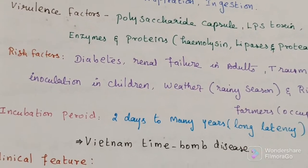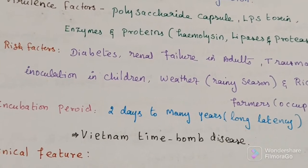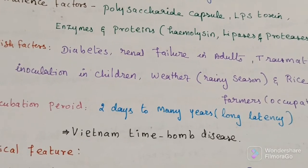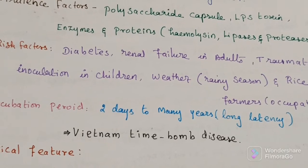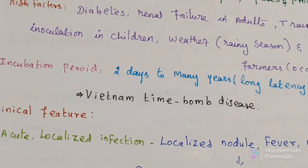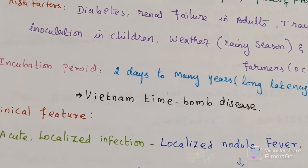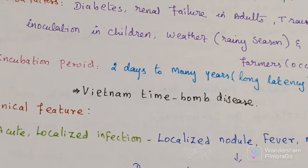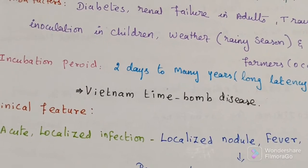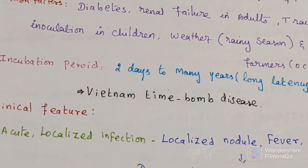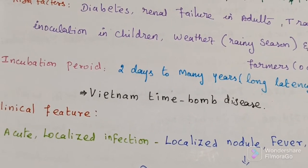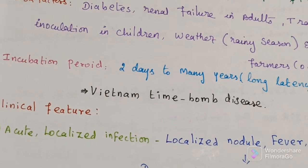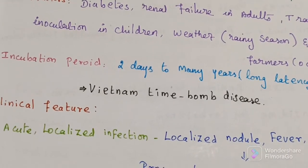The incubation period ranges from two days to many years. Because of this, it is also called the Vietnam time bomb disease, as it was generally seen during the Vietnam War.